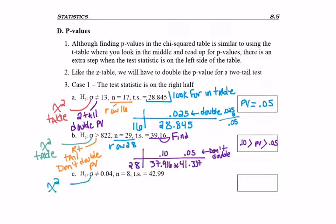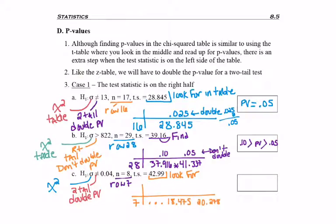Last example. Again, chi-squared table, two-tailed test because of not equal to, so I will double my p-value. I'm going to row 7 and looking for my test statistic. So in row 7, as I read from left to right, I see the 18.475 number, the 20.278 number, and then I hit the edge of my table.